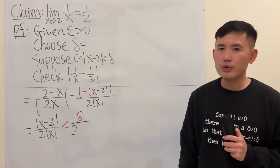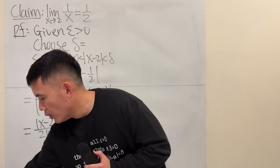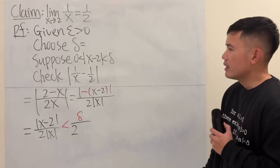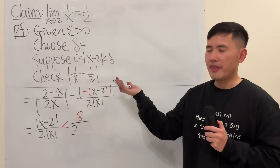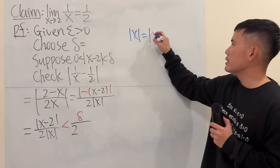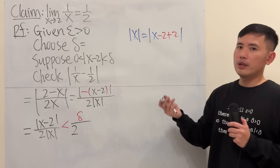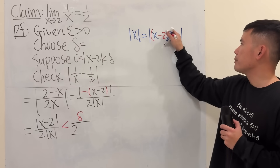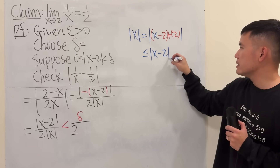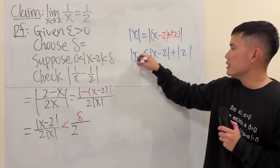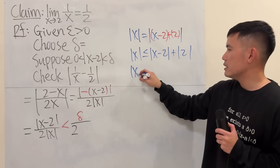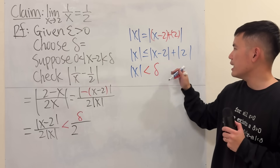But what do we do with absolute value of x on the bottom? We want to utilize absolute value of x minus 2. Let's try rewriting x as x minus 2 plus 2 inside the absolute value, so we can use the triangle inequality. This gives absolute value of x is less than or equal to absolute value of x minus 2 plus absolute value of 2, which is less than delta plus 2.